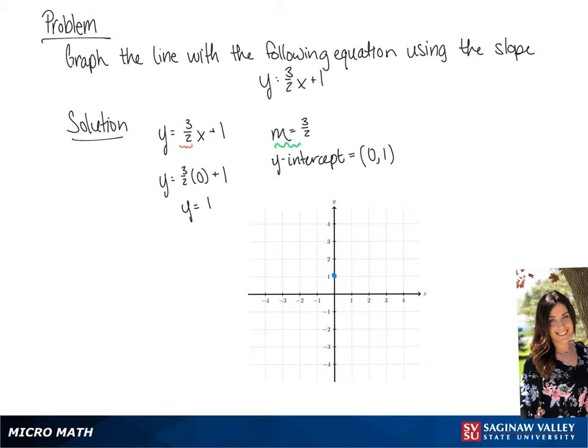So we are going to go up 3 and over 2. We're going to make a point at 2, 4, and draw the line connecting these two points.